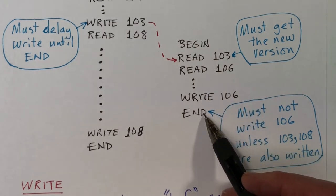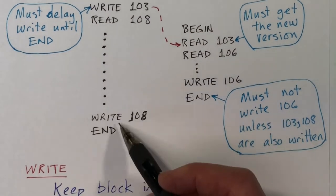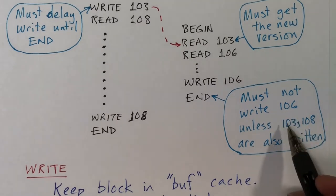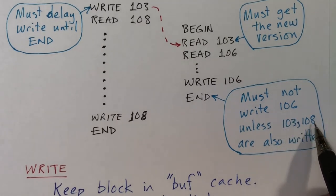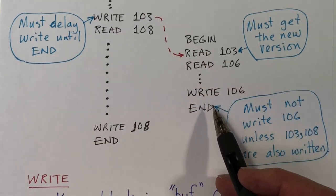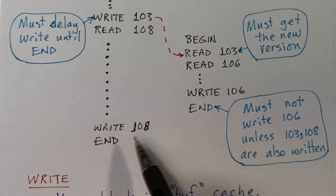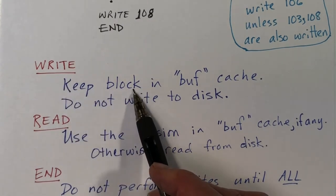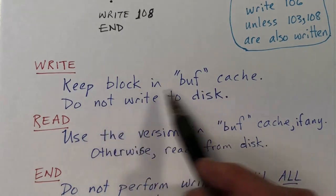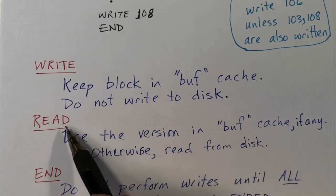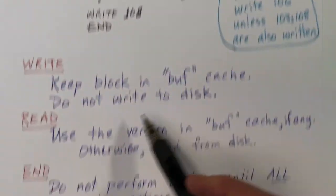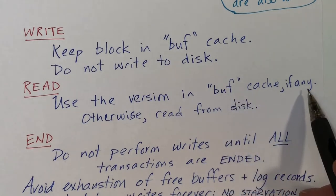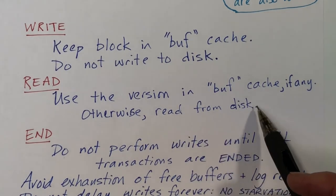We can't perform the disk update until we're ready to perform the end operation — we've got to wait. We can't write block 106 unless we are also writing blocks 103 and 108. These things are all linked together and have to be either committed together or not committed. So for the write operation, we keep the block in the buffer cache — we don't write it to the disk immediately, we just keep it in memory. For the read, we use the version of the block that is in the buffer cache if one is there; otherwise, we read the data from the disk.